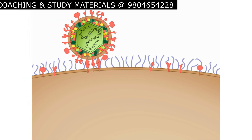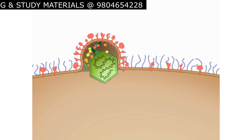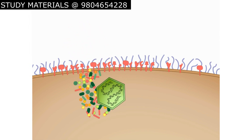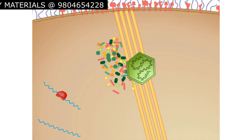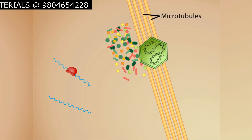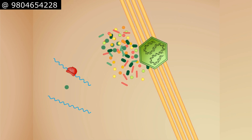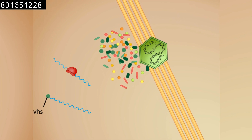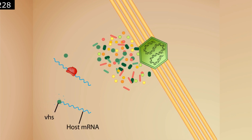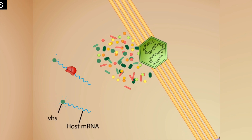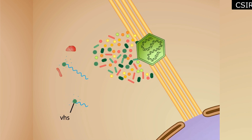The herpes virion can bind to several alternative receptor molecules in the host cell membrane, after which the envelope fuses with the host membrane, releasing the capsid into the cytoplasm. The capsid travels down a scaffold of microtubules to the nuclear membrane. At the same time, a protein from the tegument called virion host shutoff, or VHS protein, degrades the host cell's mRNA molecules, thereby eliminating competition for ribosomes and other cellular machinery.